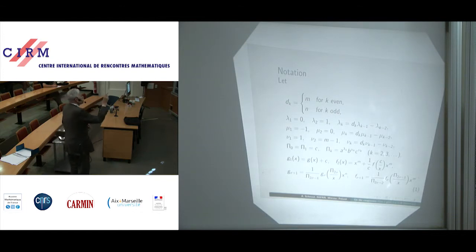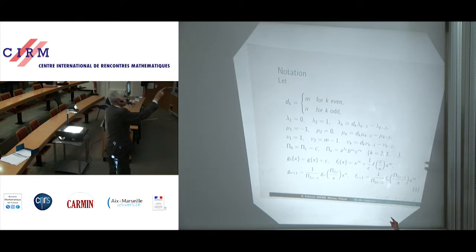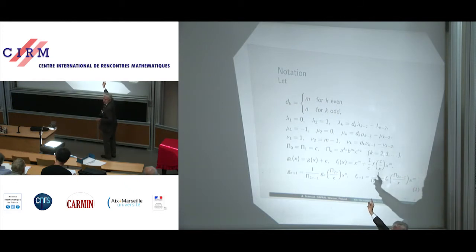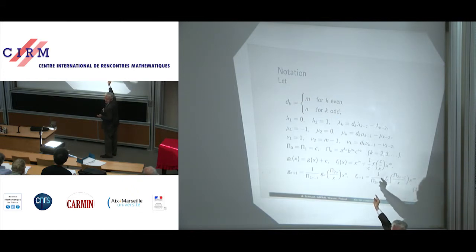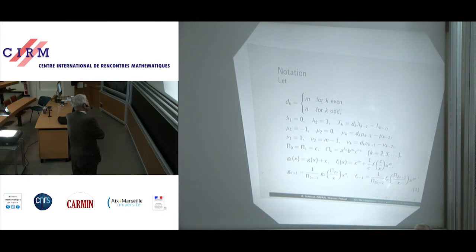And this is rather important: G_1(y, x) is just g(x) plus c, but f_2(x) is x to the m+1 over c times f(c divided by x) times x to the m. This is indeed a polynomial, because f is of degree m, so the x in the denominator cancels with the x to the m, making f_2(x) a polynomial. And g_{sigma+1} and f_{sigma+1} are defined recursively as polynomials.